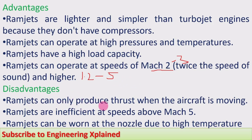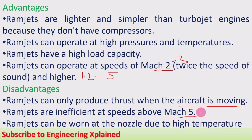Disadvantages: Ramjets can only produce thrust when the aircraft is already moving — initial movement is required for aircraft, missiles, or spacecraft. Ramjets are inefficient at speeds above Mach 5; above that, scramjets must be used. Additionally, ramjets can suffer wear at the nozzle due to the high temperature of the burnt flue gases.